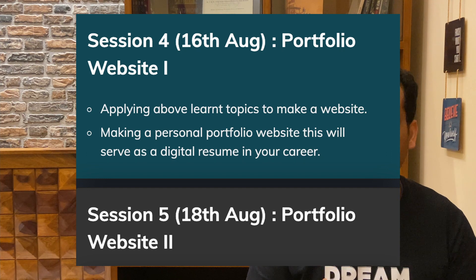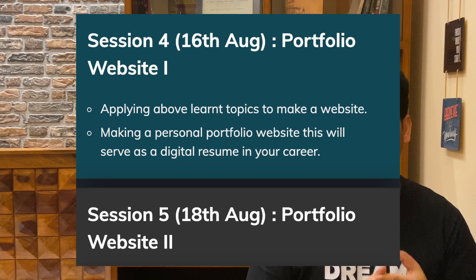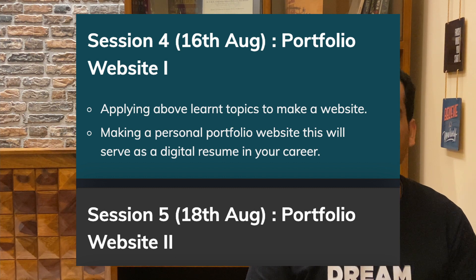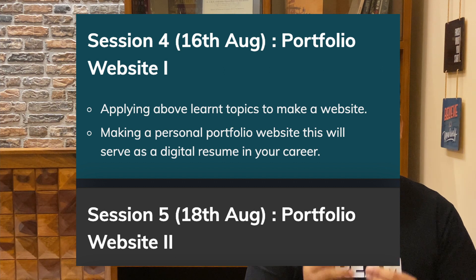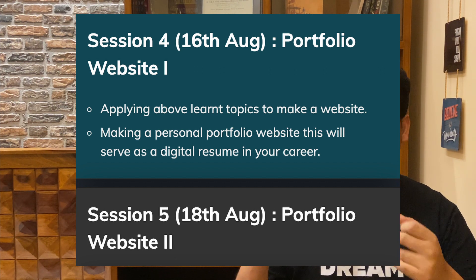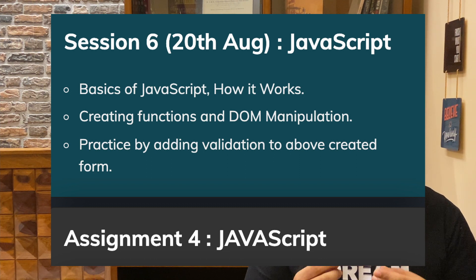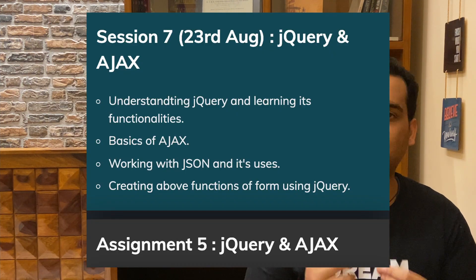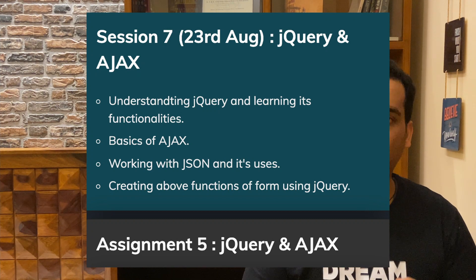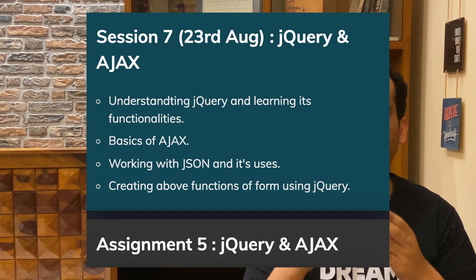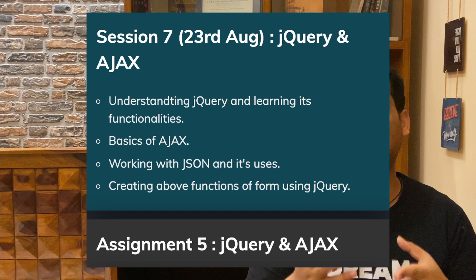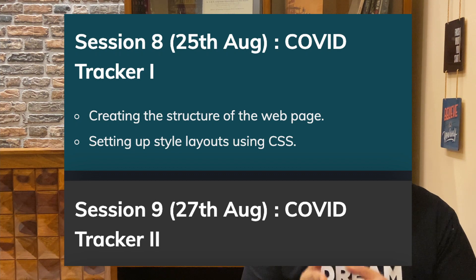Sessions four and five will be dedicated to the portfolio website — the most basic project, so we start there first, then the COVID tracker, then the SaaS website. Everything will be taught to you in the live session and you can ask your doubts in WhatsApp as well. From session six, we will start the basics of JavaScript — components, objects, the Document Object Model, and how to manipulate data using JavaScript. In session seven, we will teach jQuery and Ajax, which are also very important libraries needed to deliver a good webpage, with an assignment to complete before the next session.